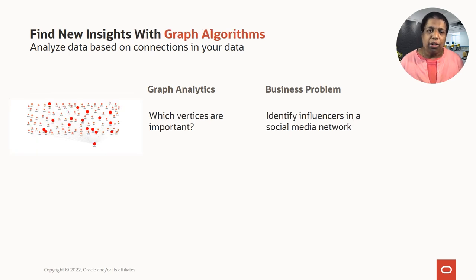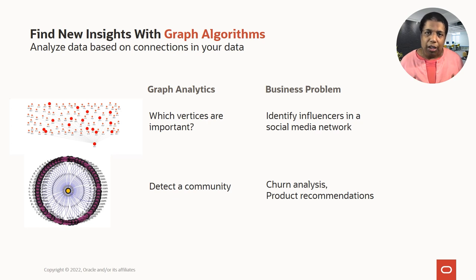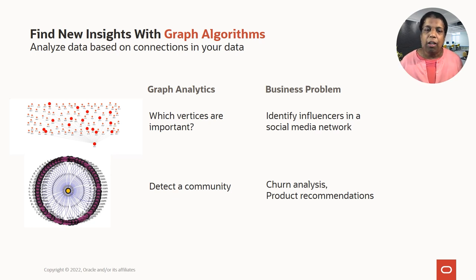When you're running graph algorithms, you're analyzing your entire graph and looking at how different vertices are connected to each other. For example, you would run a PageRank algorithm that helps identify important vertices — those connected to other important vertices. Running PageRank on a social network helps you identify influencers. You can also run graph clustering algorithms to identify vertices more connected to each other than to the rest of the graph. These could be communities in your customer dataset with similar characteristics, useful for identifying churn or making product recommendations.